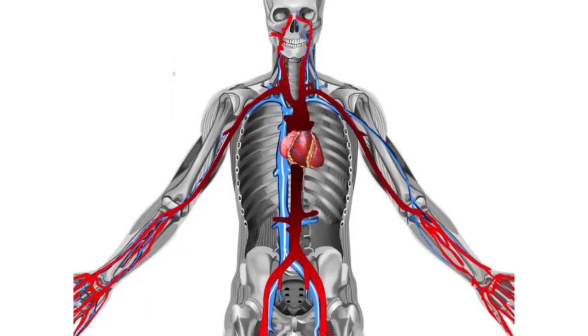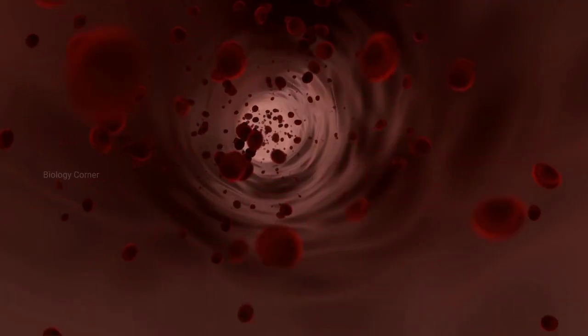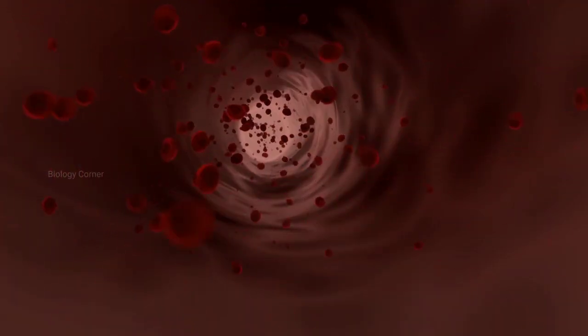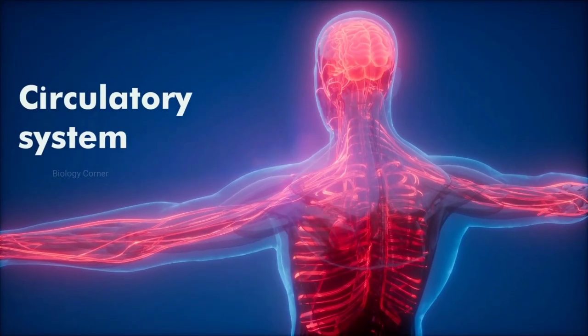All this blood flows from our heart to the whole body and then comes back to the heart. This flow of blood in our body takes place under a system which we call circulatory system.